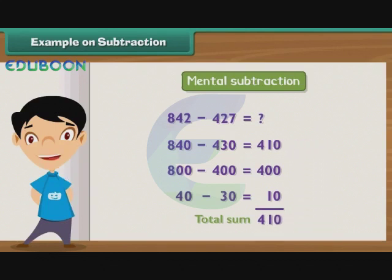But we subtracted an additional 3 when we subtracted 430 instead of 427, so we add 3 to the difference. We left out 2 when we subtracted 430 from 840 and not 842, so we add 2 more to the difference. Thus, the result of subtracting 427 from 842 is 415.